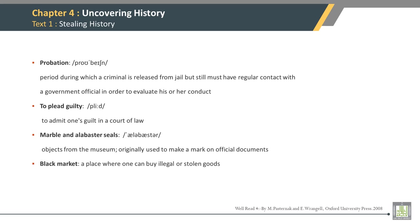Vocabulary Check. Probation: a period during which a criminal is released from jail but still must have regular contact with a government official in order to evaluate his or her conduct. To plead guilty: to admit one's guilt in a court of law. Marble and Alabaster Seals: objects from the museum originally used to make a mark on official documents. Black Market: a place where one can buy illegal or stolen goods.